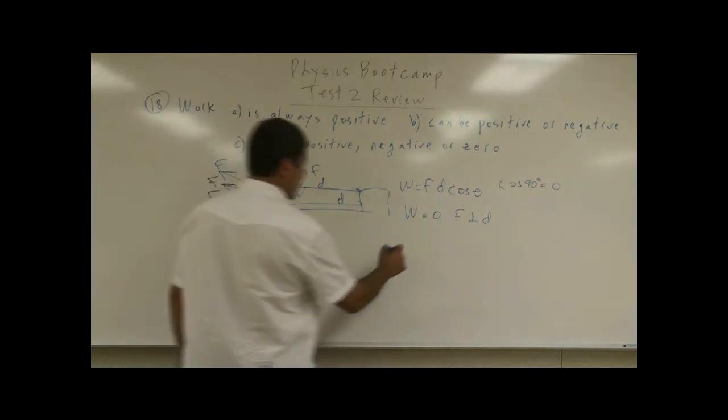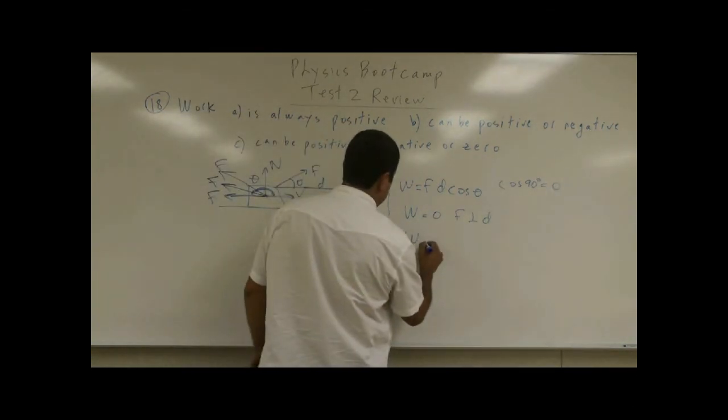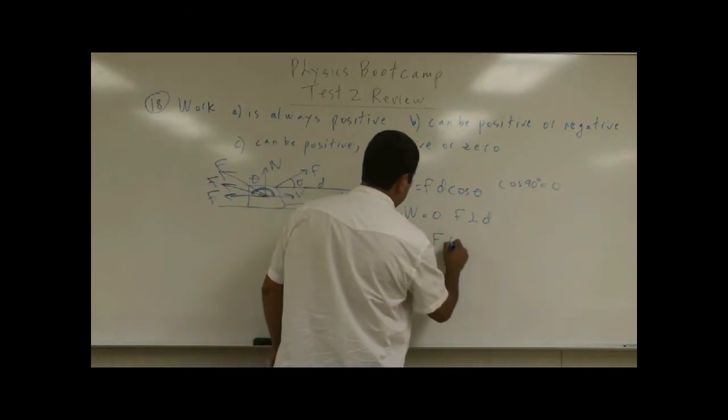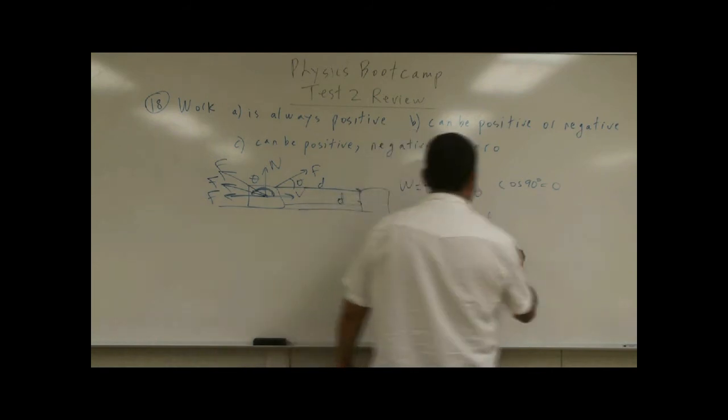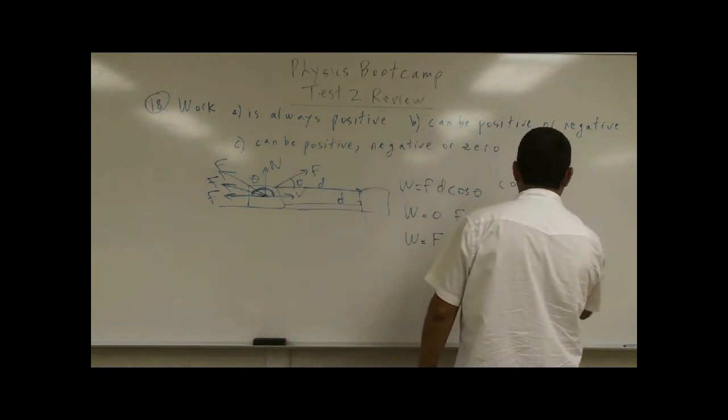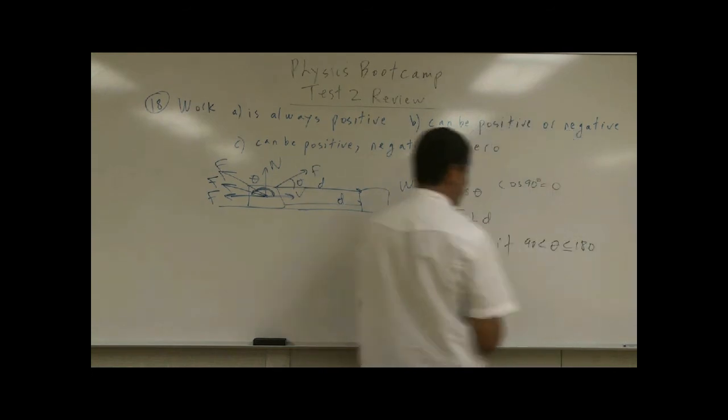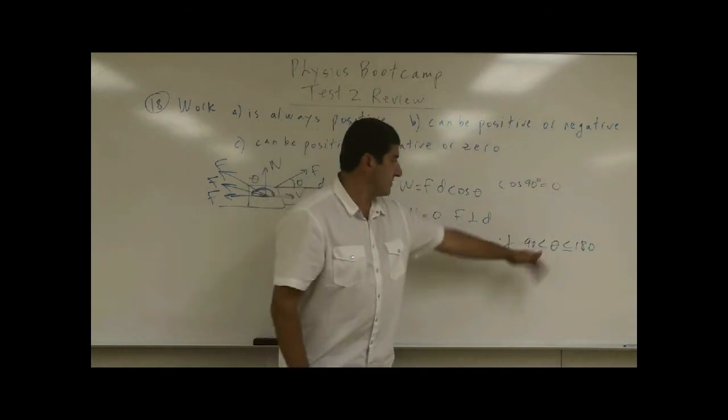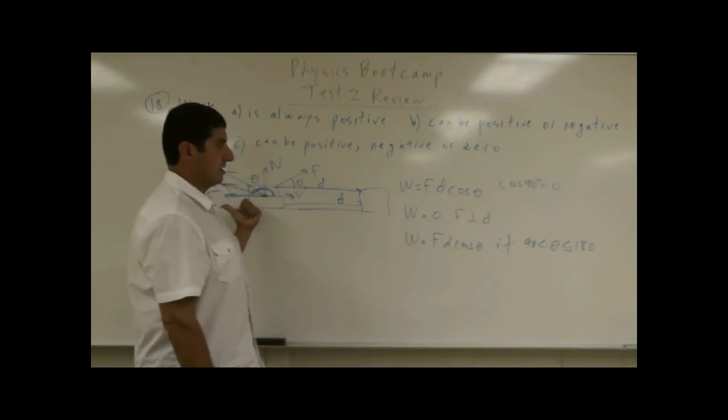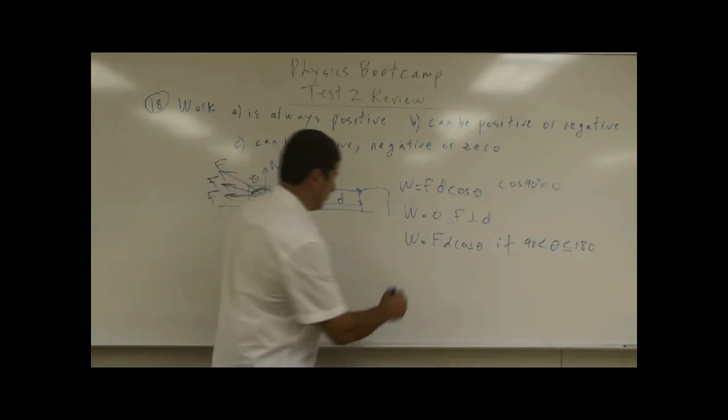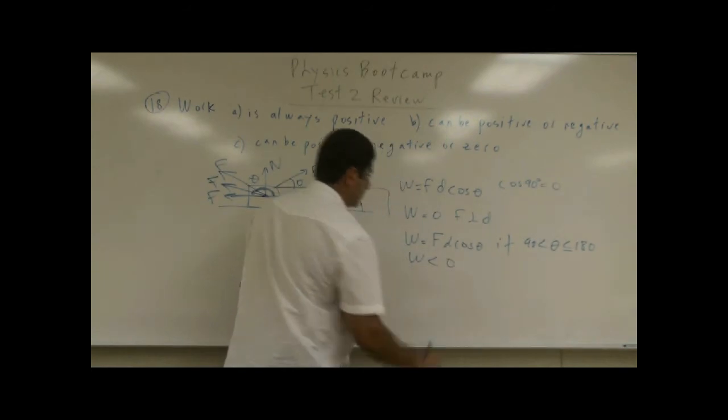So how much work am I doing? The work I'm doing is equal to F D cosine of beta. If the angle is greater than 90, less than 180, or you could even equal 180—if the angle is exactly opposite, then the work that I'm going to do is negative, less than zero.